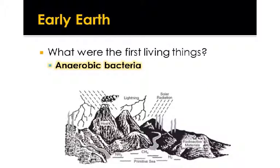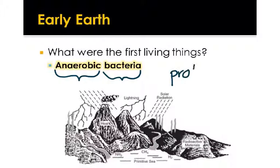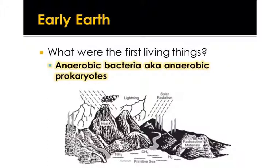Some scientists think that the first living things were anaerobic bacteria. It makes sense for the first living things to be bacteria because bacteria are very simple, and it makes sense for them to be anaerobic because there was no oxygen on Earth. Another word for bacteria is prokaryote — prokaryotes have no nucleus, and the only example of prokaryotes on Earth are bacteria. So anaerobic bacteria and anaerobic prokaryotes mean the same thing.